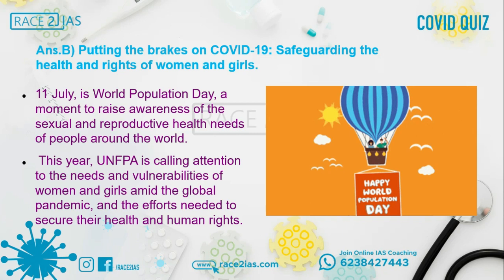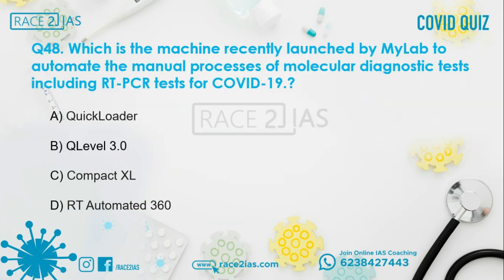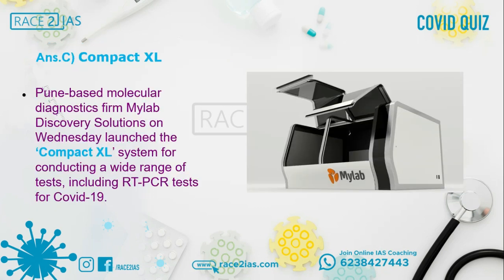Question number 48: Which machine was recently launched by MyLab to automate the manual processes of molecular diagnostic tests including the RT-PCR test for COVID-19? Option A: Q Clouder. Option B: Q Level 3.0. Option C: Compact HL. Option D: RT Automated 360. The right answer is Compact HL. Pune-based molecular diagnostics firm MyLab launched the Compact HL system for conducting a wide range of tests including the RT-PCR test for COVID-19.